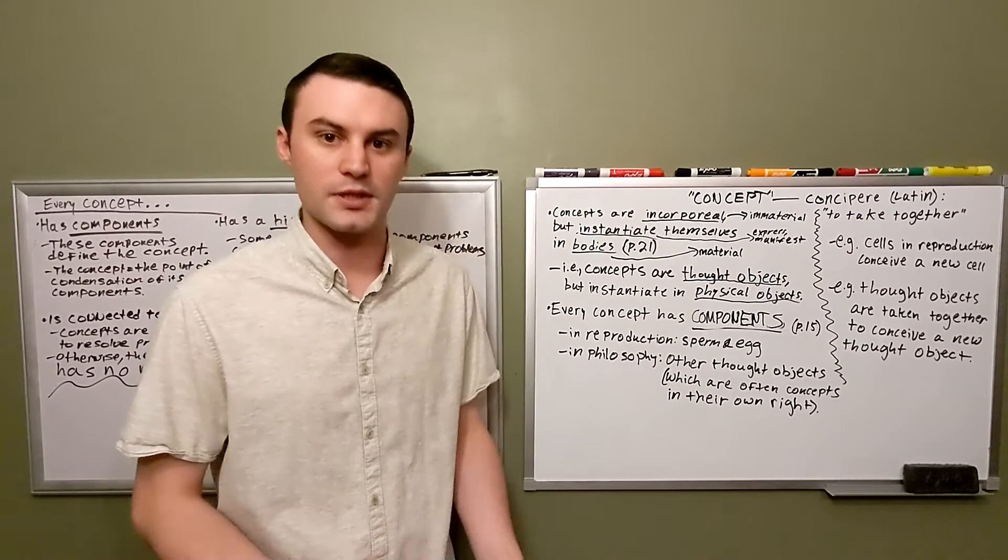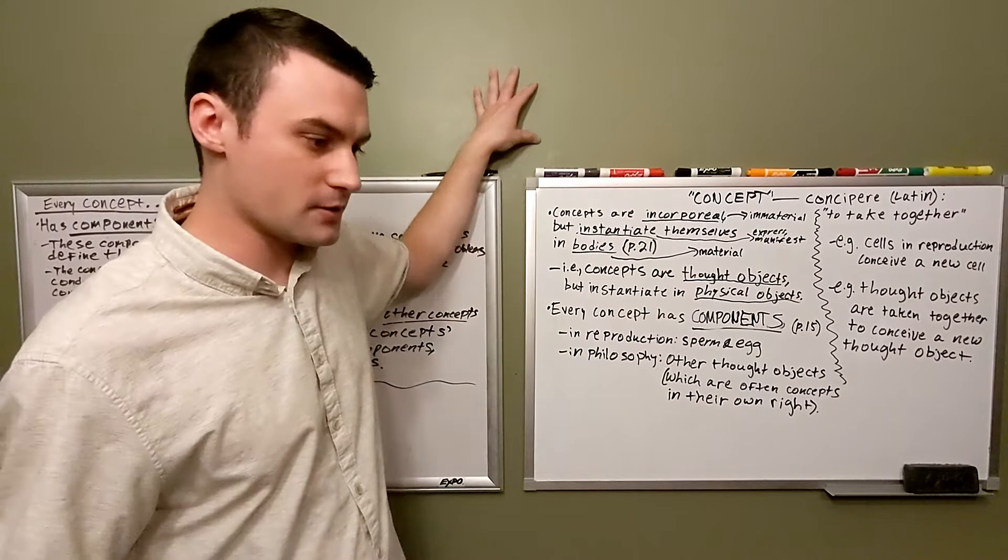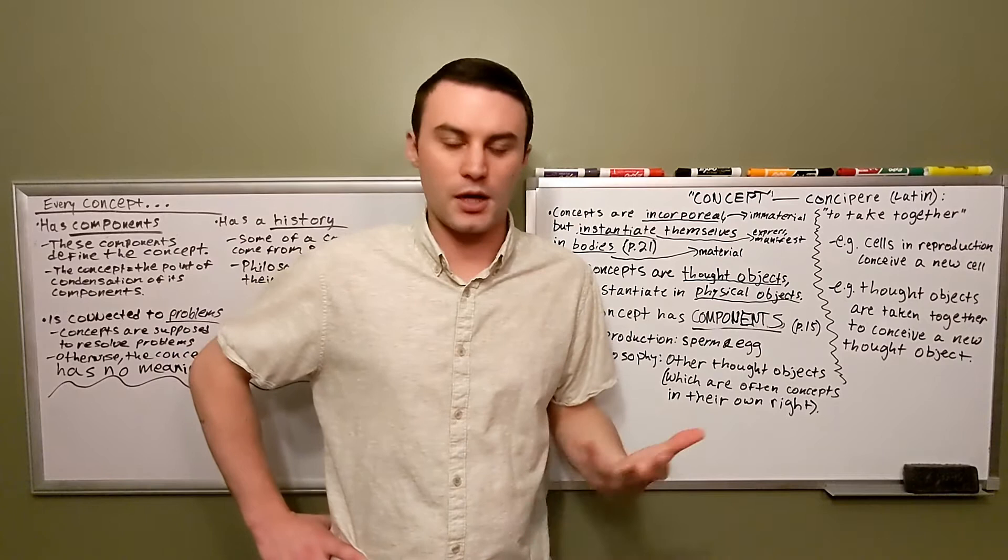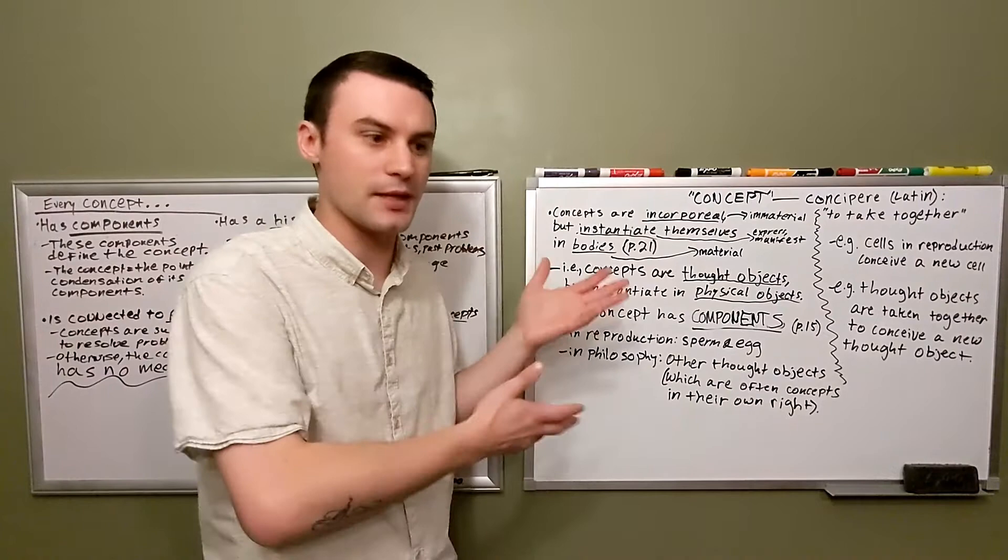Here's an example. This green wall that I'm touching is a body, it's a physical object. It's not a concept. But there are concepts called green, and there's a concept of wall, and my familiarity with these concepts allows me to look at this and say, that's a green wall.